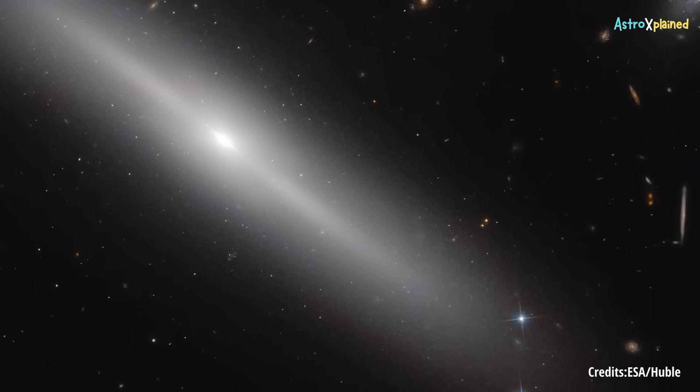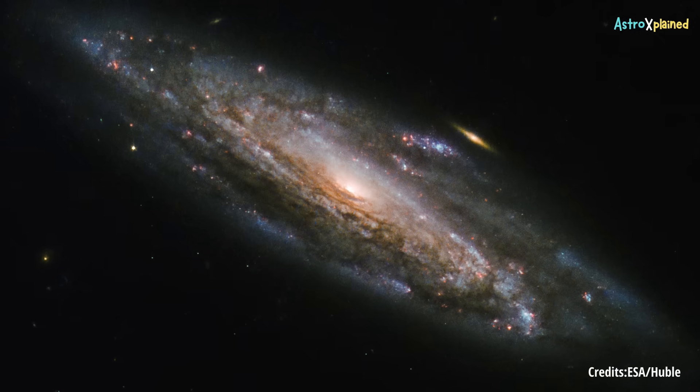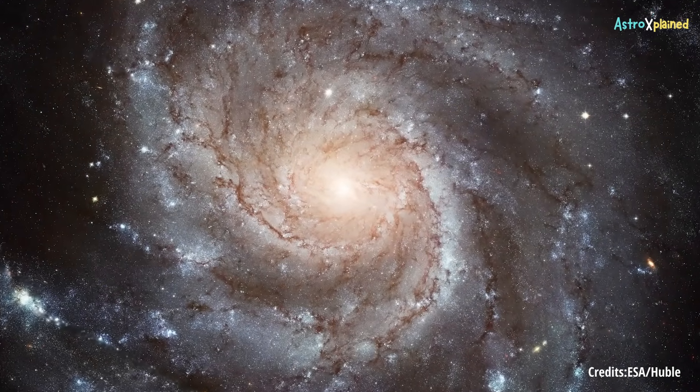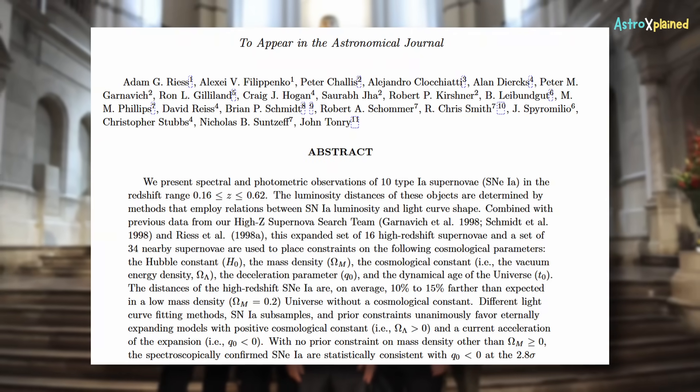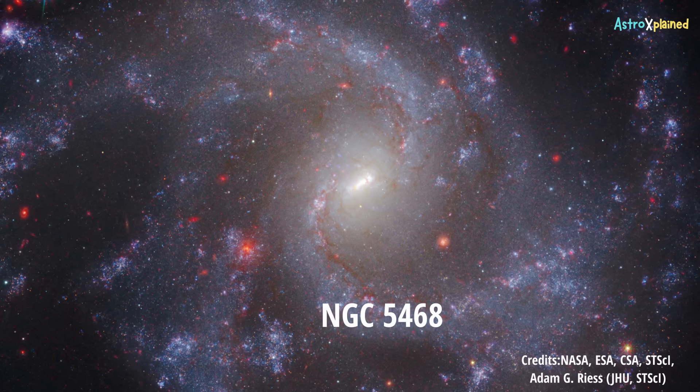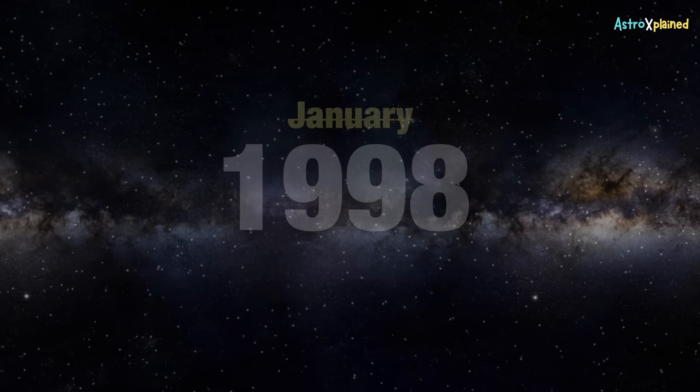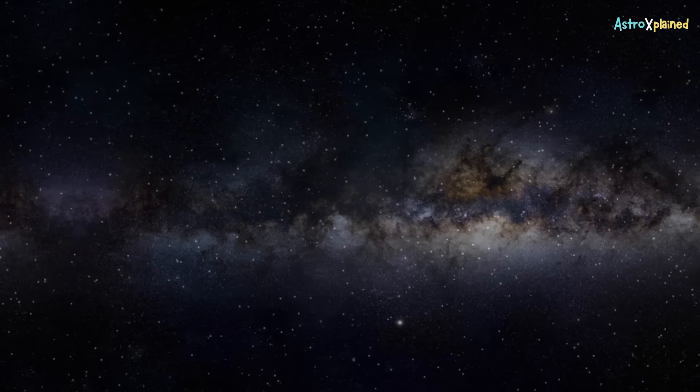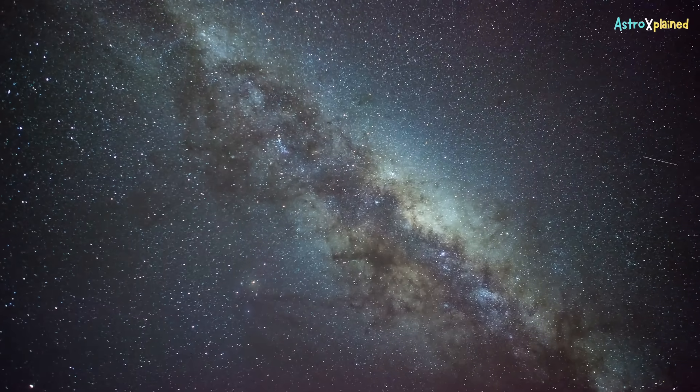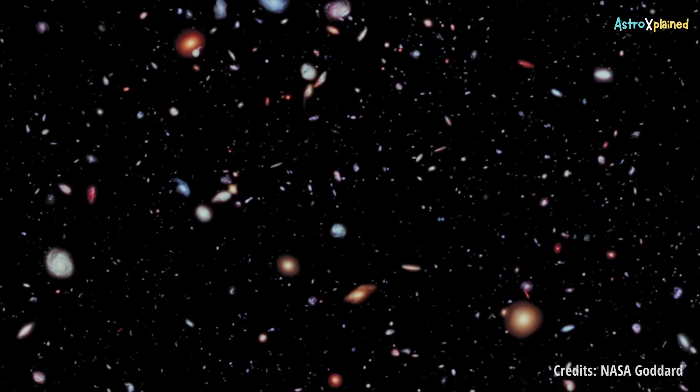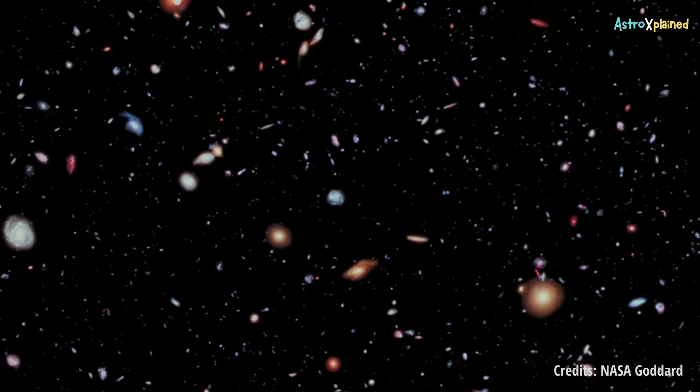The Supernova Cosmology Project, SCP, led by Saul Perlmutter, played a pivotal role in confirming the findings of the Hi-Z Supernova Search Team that the universe's expansion is accelerating. Both teams independently utilized Type Ia Supernovae to measure distances to faraway galaxies and map the universe's expansion history. In May 1998, the Hi-Z Team became the first to publish evidence of this acceleration, revealing that distant supernovae were fainter and thus farther away than expected in a decelerating universe. Earlier that year, in January 1998, the SCP had presented similar findings at a press conference, with their formal publication following later. The SCP's independent observations and analysis provided critical confirmation of the Hi-Z Team's discovery, as both groups concluded that the universe's expansion is speeding up, driven by a mysterious force later termed dark energy.